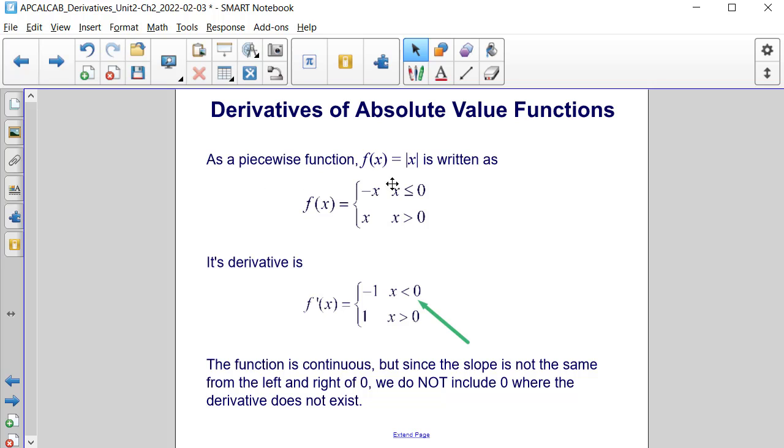As a piecewise function, f of x, being equal to the absolute value of x, is written as f of x equals negative x for x values less than or equal to 0, and it's equal to positive x for x values greater than 0. And its derivative, f prime of x,